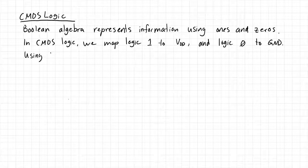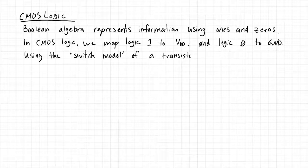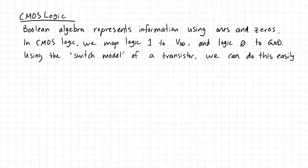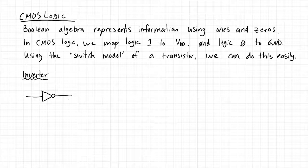Let's take a look at the most basic Boolean algebra building block: the inverter. We can draw this pictorially — this is a typical schematic of an inverter gate. We can draw a truth table: when the input to this Boolean inverter is zero, the output is one; and similarly, when the input is one, the output is zero.